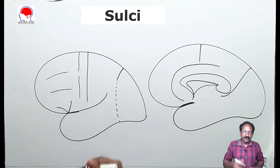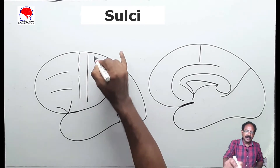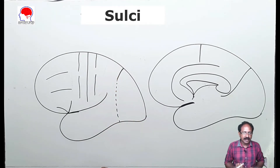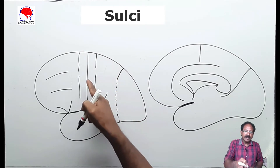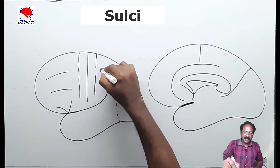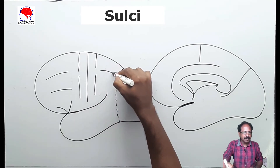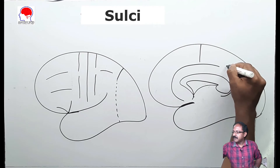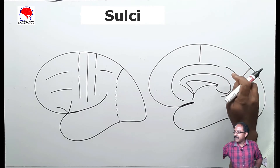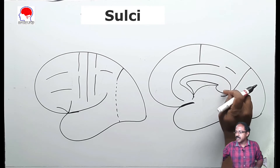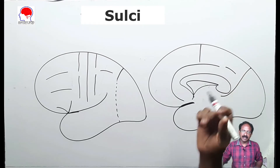Sulci in the parietal lobe: there is a sulcus present behind the central sulcus named as the post-central sulcus. There is another sulcus present within the parietal lobe named as the intraparietal sulcus. On the medial aspect, there is a sulcus in the parietal lobe above the splenium, hence named as the suprasplenial sulcus.